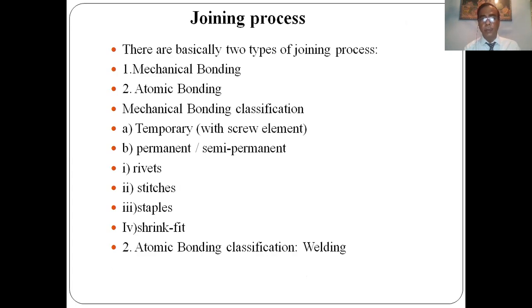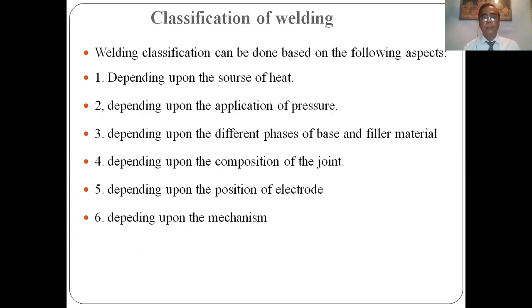There are basically two types of joining processes: one is mechanical bonding and another is atomic bonding. Mechanical bonding classifications include temporary (with screw elements), permanent, and semi-permanent (rivets, stitches, staples, seam fit). Atomic bonding includes welding. Welding classification can be done based on the following aspects: depending on the source of heat, depending on the application of pressure, depending on the different phases of base and filler materials, depending on the composition of the joints, depending on the position of electrodes, and depending on the mechanisms.